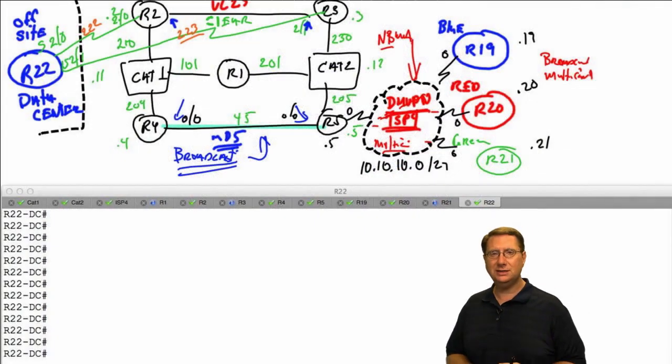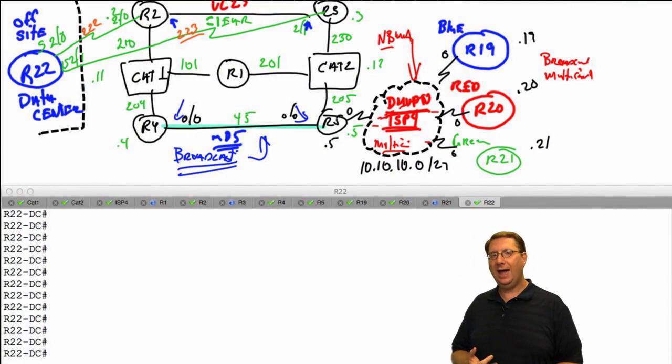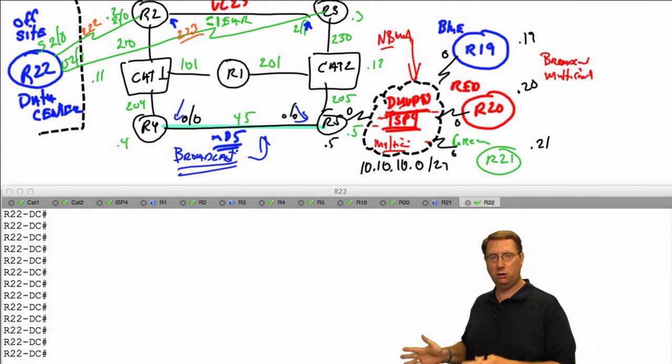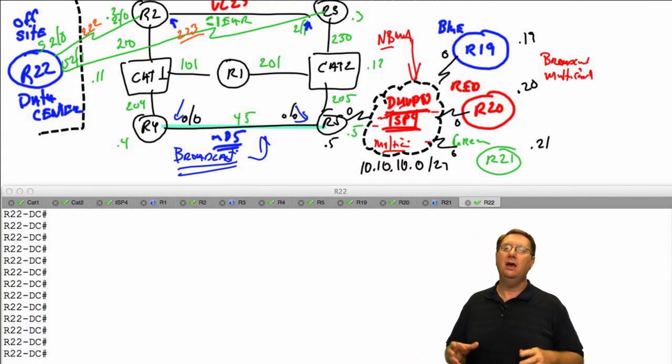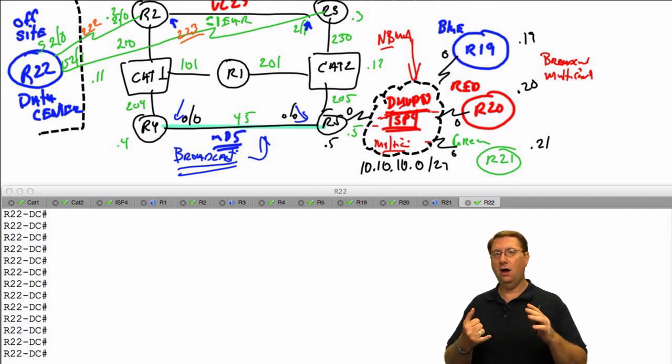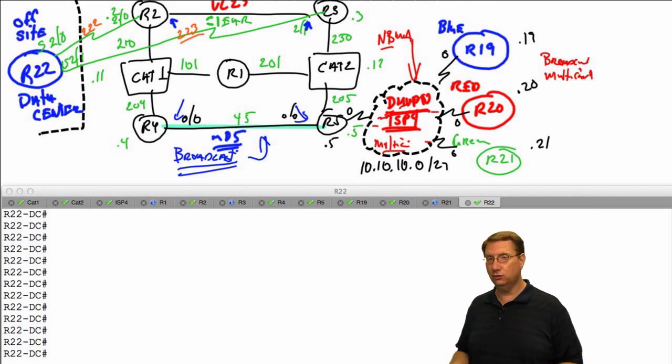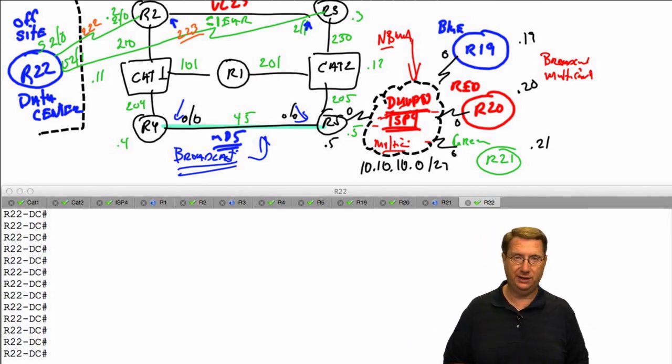Hey everyone. The time has come in our discussion about RIP version 2 to begin looking at prefix manipulation. What I mean by prefix manipulation is being able to manipulate the decisions that our routers are going to make on a case by case basis. We're going to look at summarization as a tool to reduce the amount of information stored in our routing table, and also as a tool for traffic engineering and filtering information exchanged between our devices.